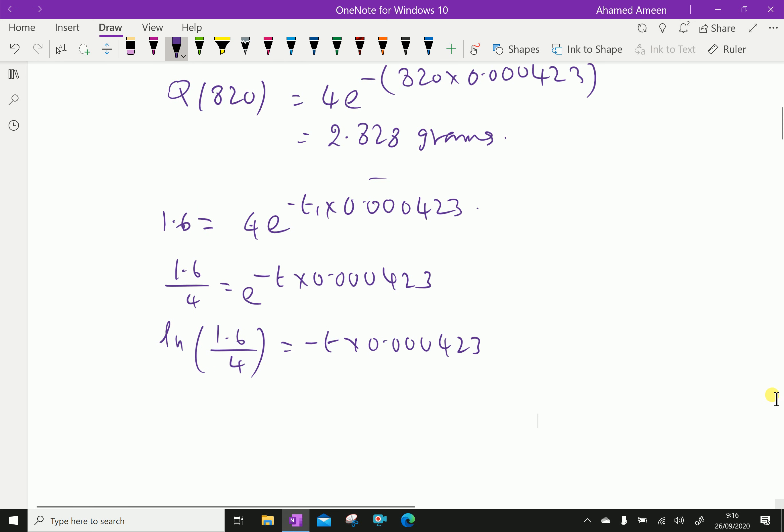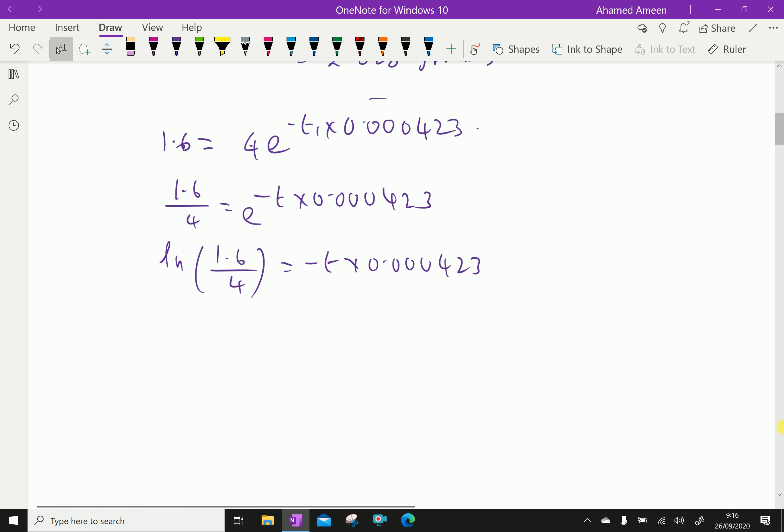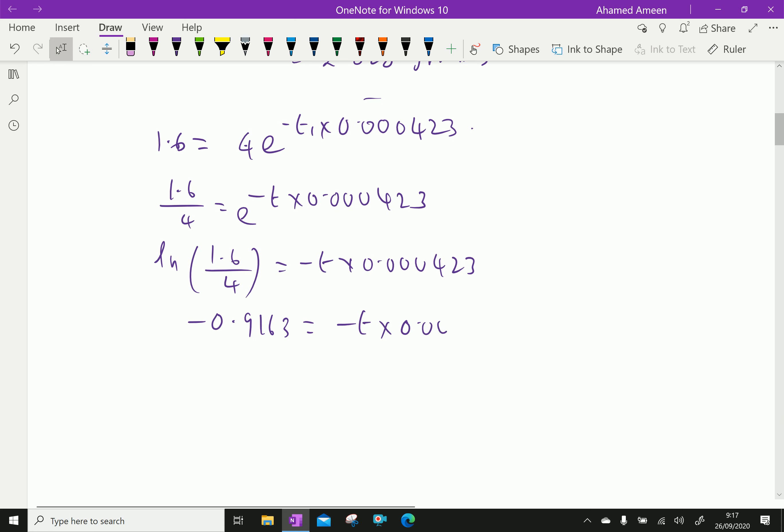Here, ln of 1.6 over 4 gives minus 0.9163 equals minus t times 0.000423. Then t equals 0.9163 over 0.000423, which gives 2166.2 years.